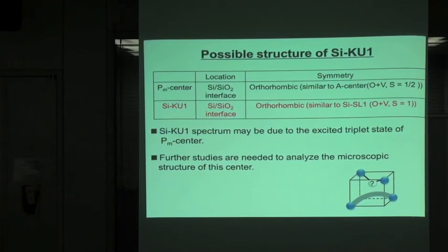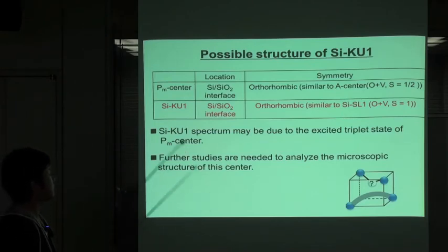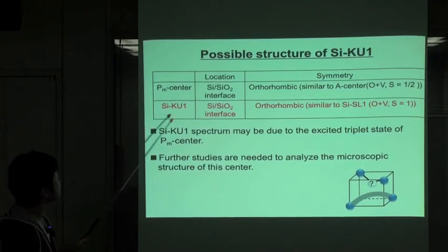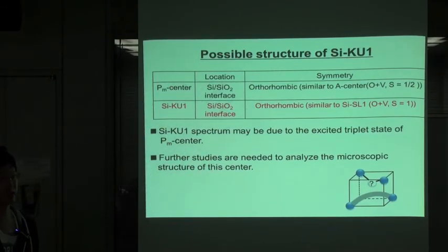From this experiment, we could obtain the information about SI-KU1. This table shows the comparison of KU1 and the other defects, like PM and the A center.